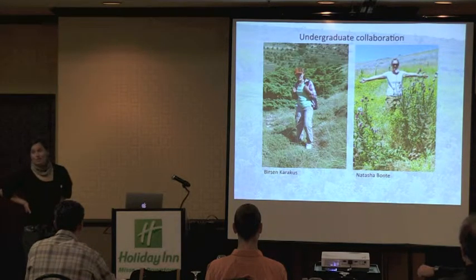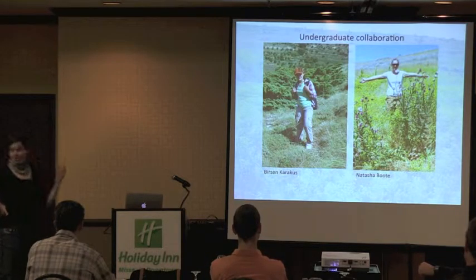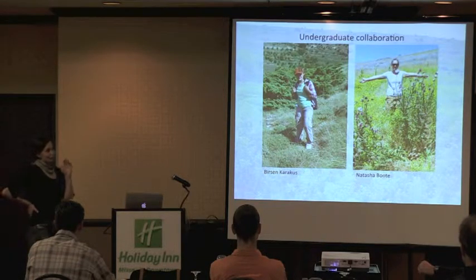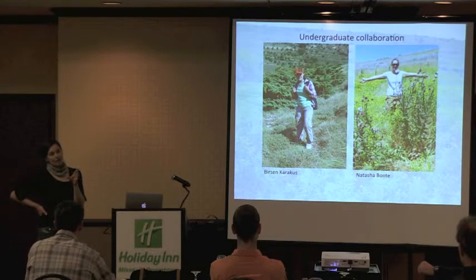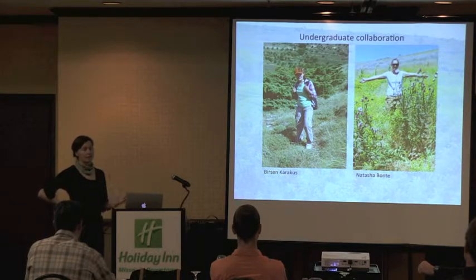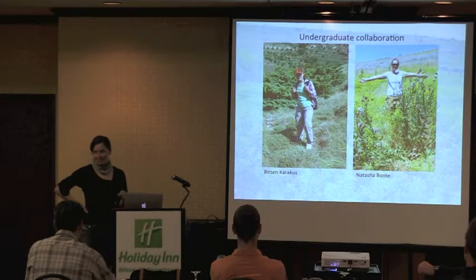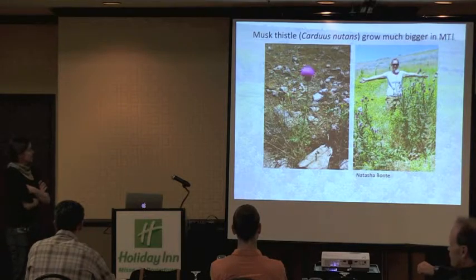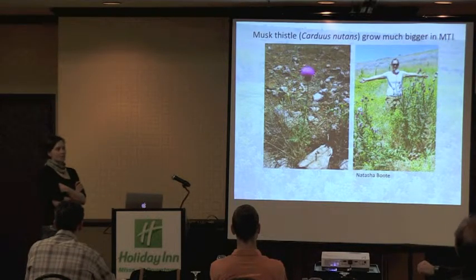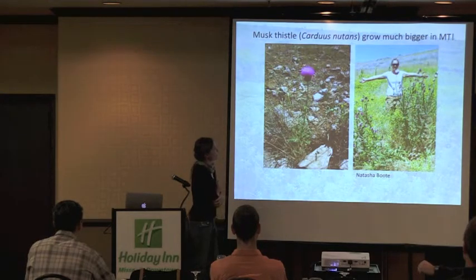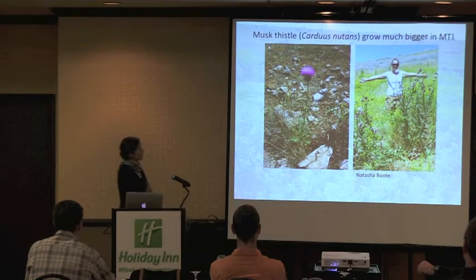What I was able to do while there was establish an undergraduate collaboration between a Turkish student, Birson Karakas, and Natasha Boot, who is here today. They focused on six plant species — three invasive in Montana and on the noxious species list, and three that are not. They collected shoot biomass and seed production data on established natural populations. As a teaser: musk thistle, Carduus nutans, grows much bigger in Montana than in Turkey — quite a spectacular difference.